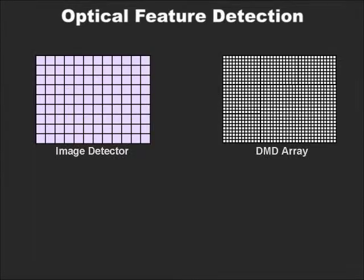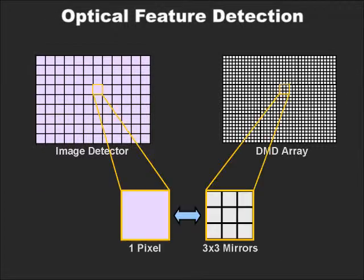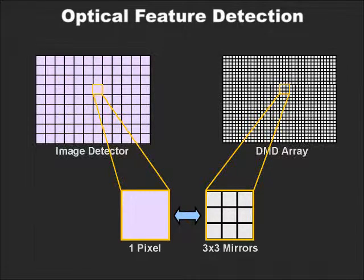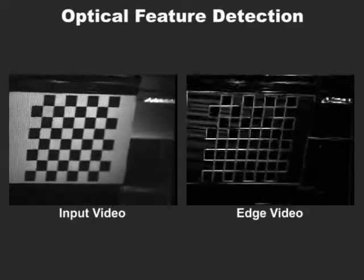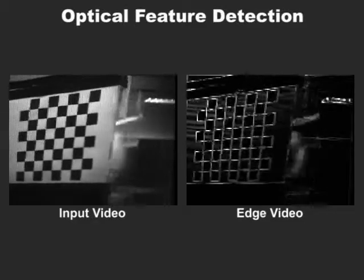When a DMD array has a resolution that is much higher than that of the image detector used, each pixel of the detector optically maps to a local set of DMD elements. In this case, features in the scene can be detected at an intrapixel level by applying a feature detector to the light cone associated with each pixel. Here, we see the results of applying an edge detector to a dynamic scene.